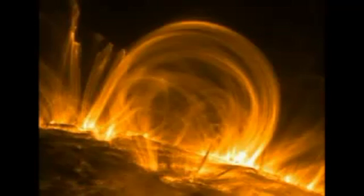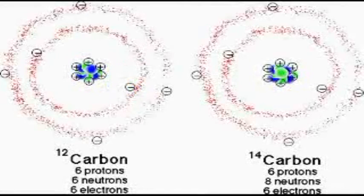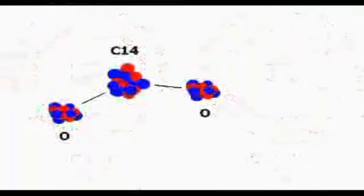Our upper atmosphere is constantly being bombarded by neutrons from the sun. When one of them hits a nitrogen atom in the air, it knocks off a proton, changing the atom from nitrogen into carbon. But this is a heavy and unstable form of carbon called carbon-14, or C-14. The normal form of carbon is C-12. In the atmosphere, C-14 combines with oxygen to make carbon dioxide, which is then absorbed by plants and into the bodies of animals that eat the plants.